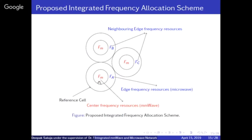At the cell edge, macro wave frequency is divided into three parts — FA, FB, FC — to avoid interference. So there is frequency reuse in the macro wave part but not in the millimeter wave part, because interference is already minimal there. A user with SNR higher than the threshold will be served by millimeter wave; otherwise they'll be served by macro wave frequency.